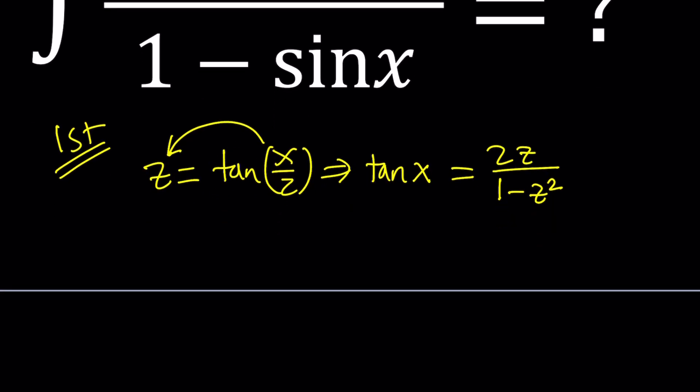We've got to find a couple other things, such as what is dx, right? So let's go ahead and try to isolate x from here. If you do arctangent on both sides, you get x over 2 equals arctangent or inverse tan z. And then multiply both sides by 2, and you get x equals 2 times arctangent of z.